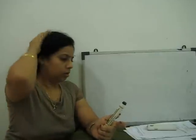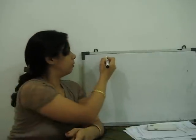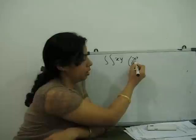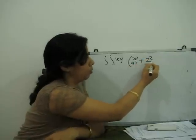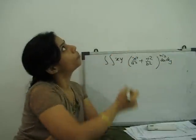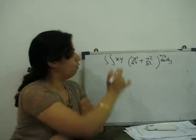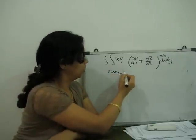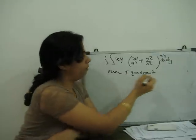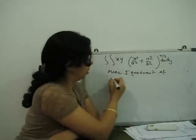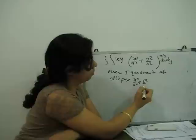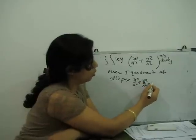One is for ellipse. If double integral x square upon a square plus y square upon b square to the power n by 2 dx dy over the first quadrant of the ellipse x square upon a square plus y square upon b square equal to 1.